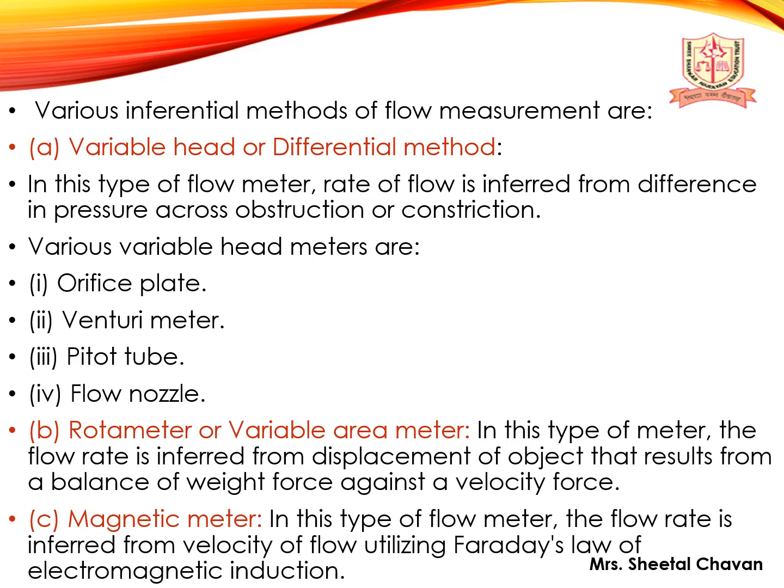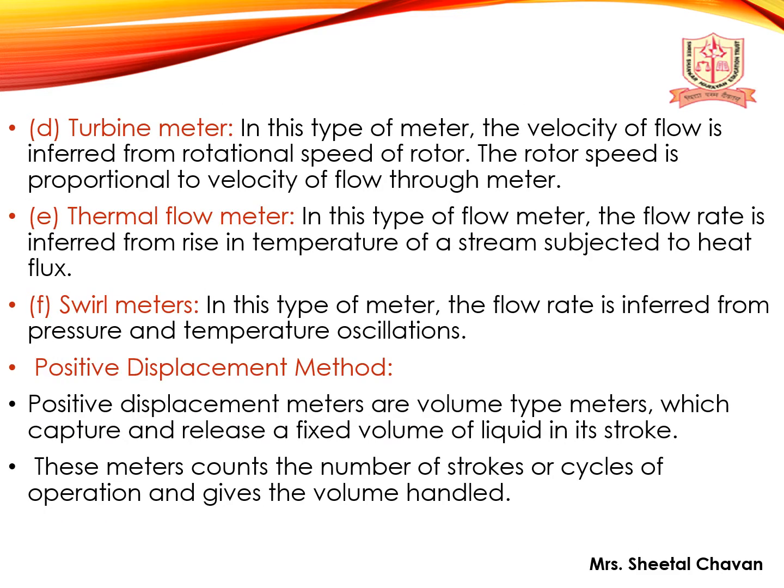The second type is the rotameter or variable area meter, where the flow rate is inferred from the displacement of an object that results from a balance of weight force against velocity force. The third is the magnetic meter, where the flow rate is inferred from the velocity of flow utilizing Faraday's law of electromagnetic induction. The fourth is the turbine meter, where the velocity of flow is inferred from the rotational speed of a rotor, which is proportional to the velocity of flow through the meter.